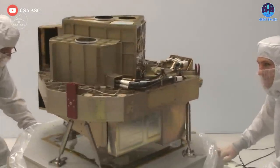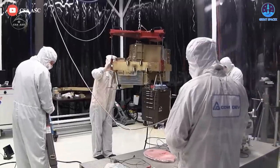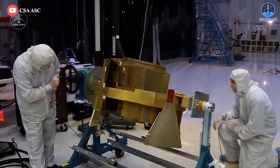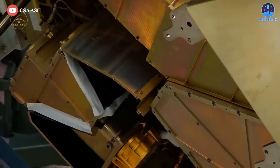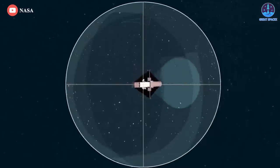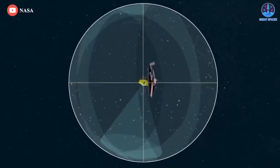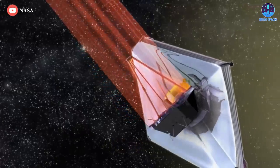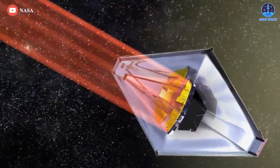Notably, the FGS, which was built by the Canadian Space Agency, is not a science instrument and instead keeps the observatory pointing properly at its target. Still, the stunning image provides a taste of what's to come when the most powerful and expensive space observatory ever built finally commences its ambitious science work in earnest.